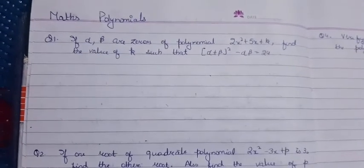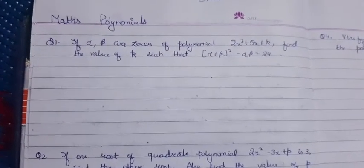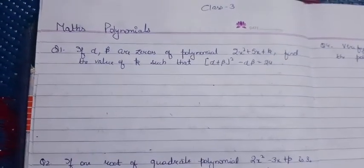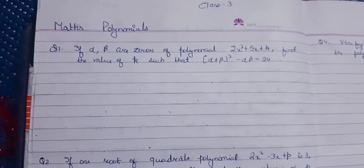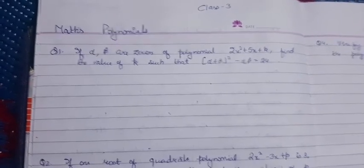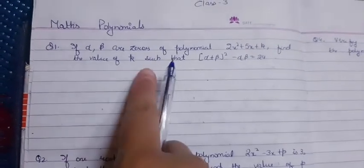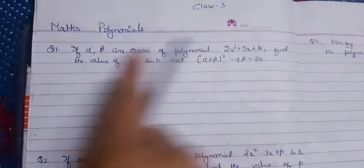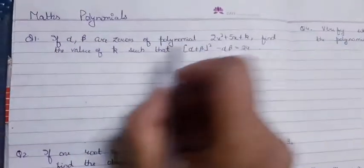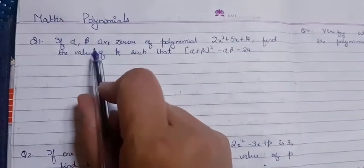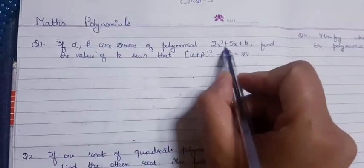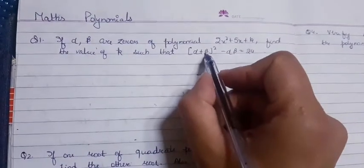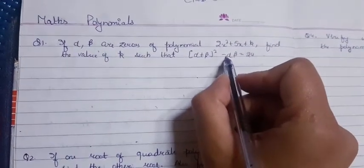Hi, a very good evening. Let's continue with polynomials. The first question is: if alpha and beta are zeros of the quadratic polynomial 2x² + 5x + k, then find the value of k such that (α + β)² - αβ = 24. Now you have alpha and beta given as zeros of the polynomial, and here we have to find out that (α + β)² - αβ = 24.